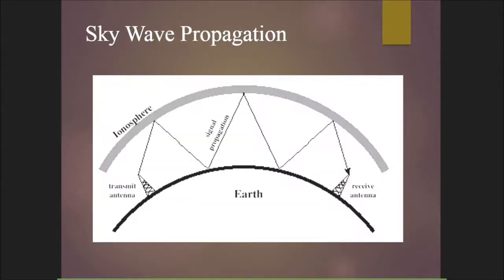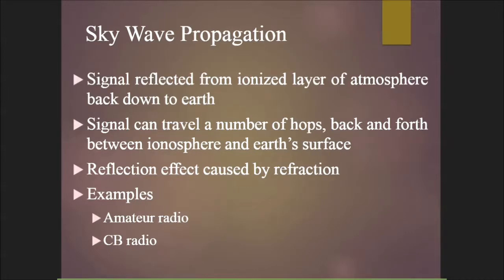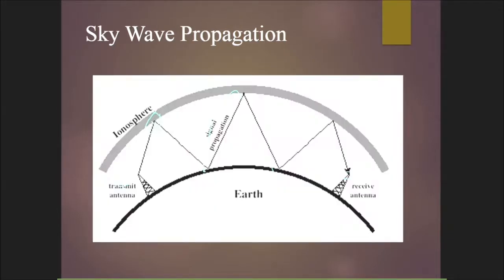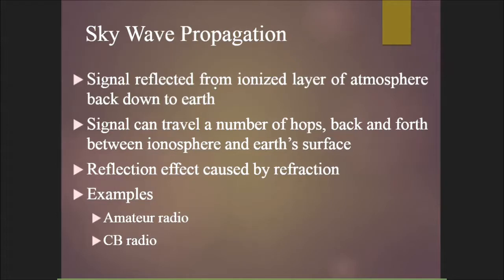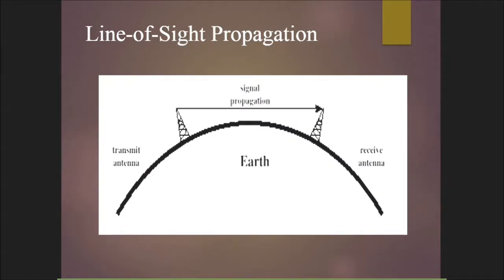In sky wave propagation, the signal is sent skyward from the transmitting antenna. Due to ionospheric reflection, the signal bounces multiple times between the earth and the ionosphere, eventually reaching the receiving antenna. The signal can travel a number of hops — around three — between the ionosphere and earth's surface. This reflection effect is caused by refraction. Examples include amateur radio and CB radio.